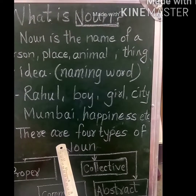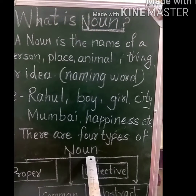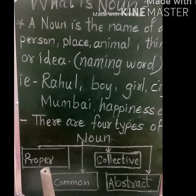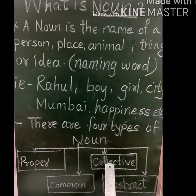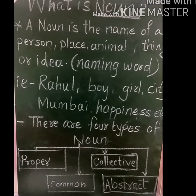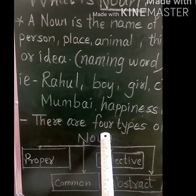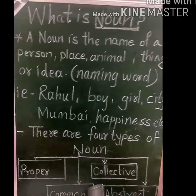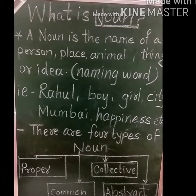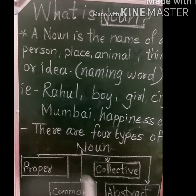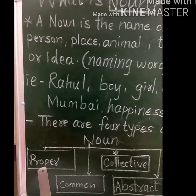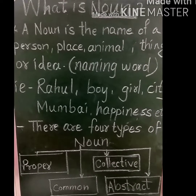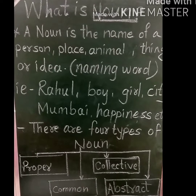Now we are going to see its types. There are four types of noun: proper, common, collective, and abstract. Today in this session, we are going to learn two nouns — proper and common. The remaining two, collective and abstract, we are going to learn in the next session.